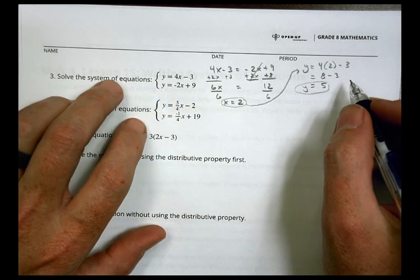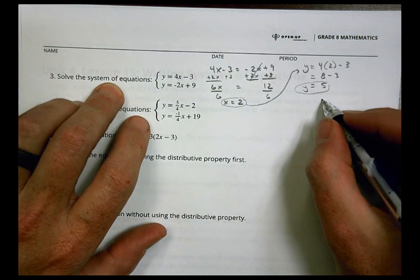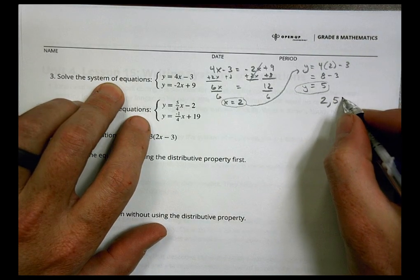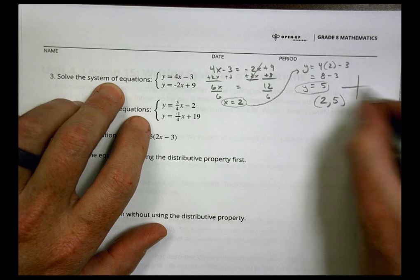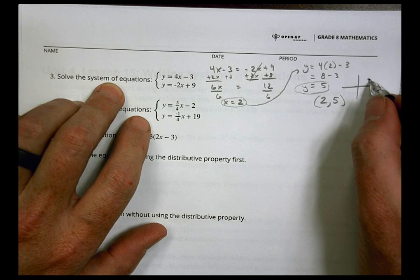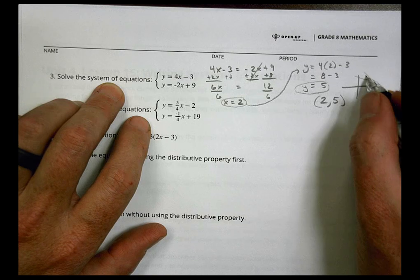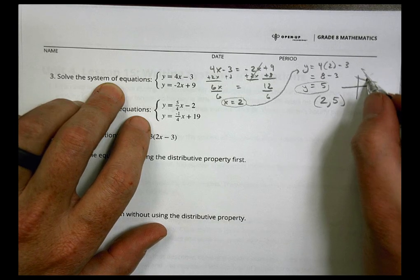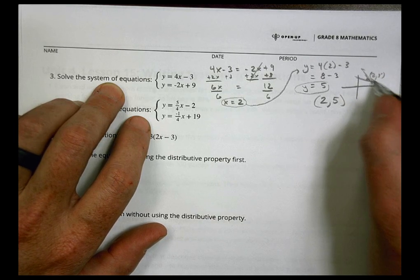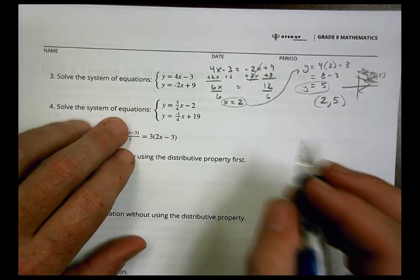So our solution for the system of equations would be (2, 5), meaning that if I had a graph, the place where those would meet would be at (2, 5), and the two lines would cross there at that point. That's the idea.